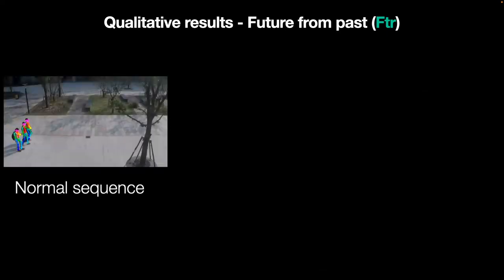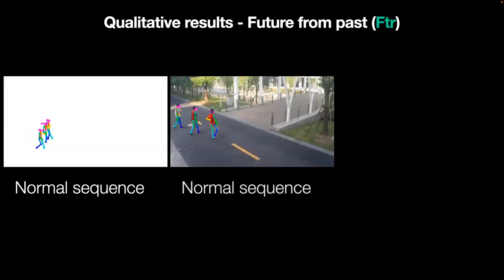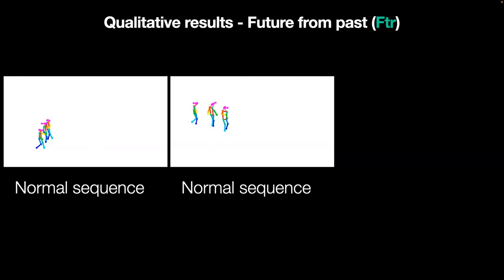We also provide qualitative results of extrapolated future sequences from observing past segments of the trajectory for normal trajectories in which the future can be effectively reconstructed, for normal sequences, and for normal sequences in which the reconstruction allows for the easy detection of anomalies.